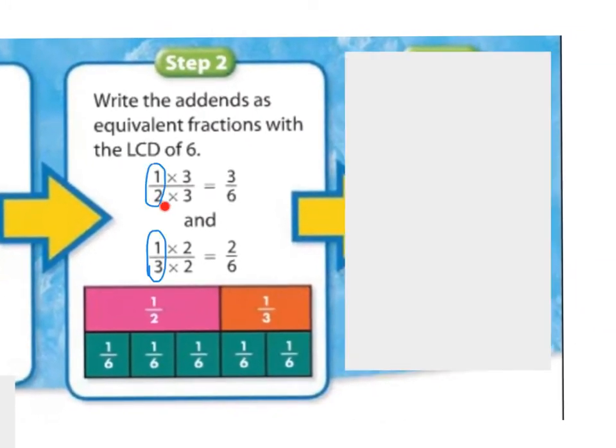Alright, so we have our fraction of one-half and our fraction of one-third, and we know that we're adding them together. We found that two and three can both multiply to six. So, we're thinking, what do I need to multiply two by so that six is on the bottom? Oh, well, two times three is six, so we need to multiply the top by the same number. So, we multiply by three over three. So, one-half is equal to three-sixths.